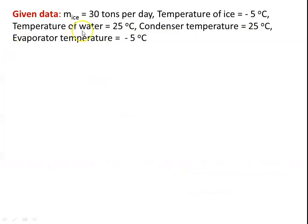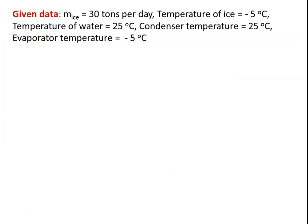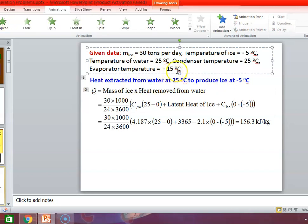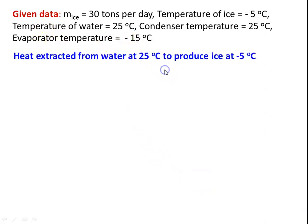Given data: mass of ice produced = 30 tons/day; temperature of ice = −5°C; initial temperature of water = 25°C. The water at 25°C is converted into ice at −5°C. Condenser temperature = 25°C, evaporator temperature = −15°C.